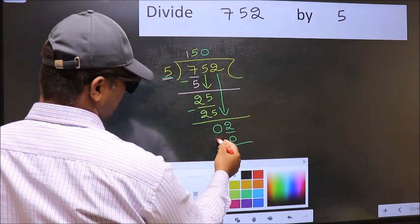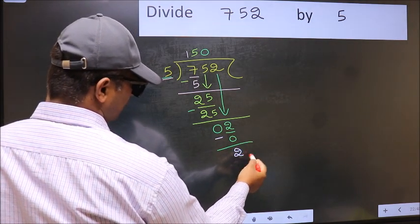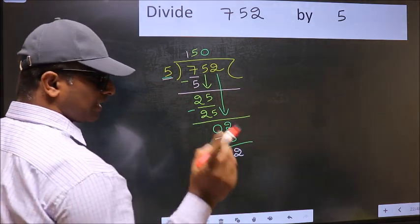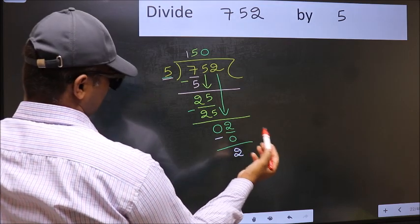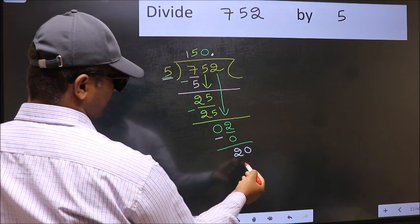Now you should subtract. 2 minus 0, 2. Over here, we did not bring any number down. And 2 is smaller than 5. So now you can put dot and take 0. So 20.